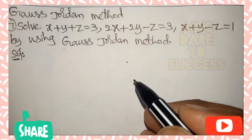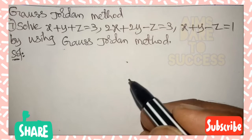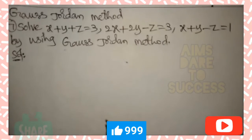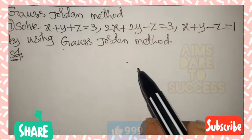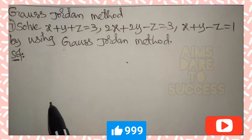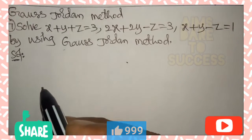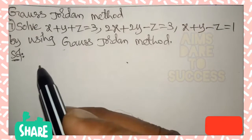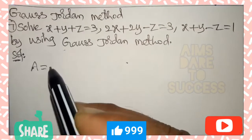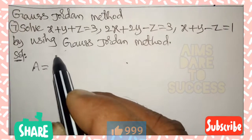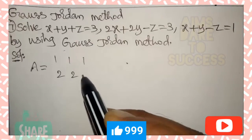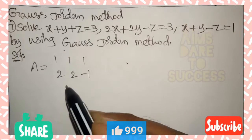Gauss-Jordan method — a very important previous VIP question. Solve: x + y + z = 3, 2x + 2y - z = 3, x + y - z = 1 using the Gauss-Jordan method. We can write matrix A using the x, y, z coefficients from the given three equations: first row is 1, 1, 1.